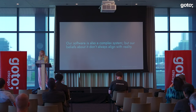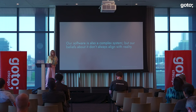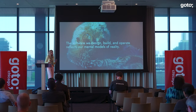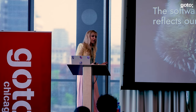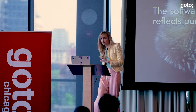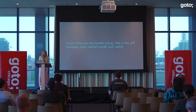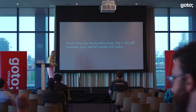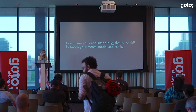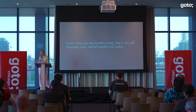Our software is also a complex system, but our beliefs about it don't always align with reality. The software we design, build, and operate reflects our mental models. Mental models are formally defined as our cognitive representations of external reality — basically, we hold in our heads a smaller-scale representation of how we think the world works. In software, we implement a design that reflects a mental model, then create a subsequent mental model of how our implementation works — nested mental models. Every time you encounter a bug, that's the difference between your mental model and reality. Mental models are dynamic; they change as a system changes and as context changes.